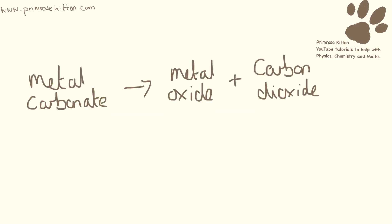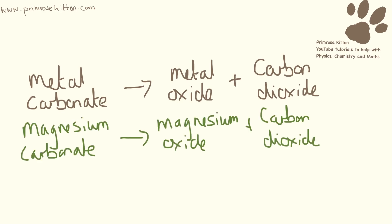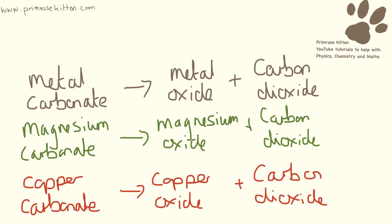For the thermal decomposition of metal carbonates, there is a general formula: metal carbonate turns into metal oxide plus carbon dioxide. For example, magnesium carbonate will turn into magnesium oxide plus carbon dioxide — the only difference is replacing the word 'metal' with the actual metal. Or we could have copper carbonate turning into copper oxide and carbon dioxide.